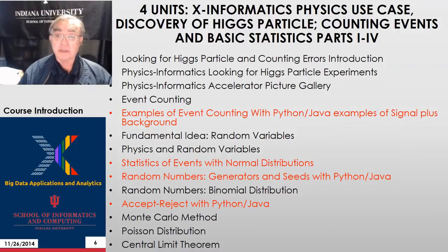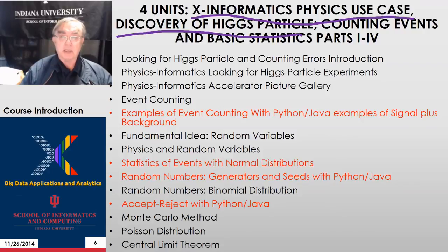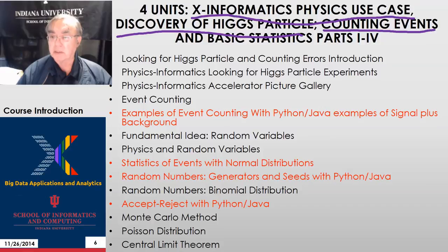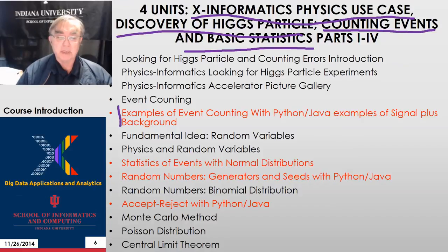This is the final slide of this particular lesson, covering just the first few sections of the class. Then we have four units on the x-informatics physics use case, focused entirely on the discovery of the Higgs particle, although a lot of the discussion is pretty general. We use this as an opportunity to discuss general counting experiments — physics just counts the number of times a certain thing happens, which is a very general experimental technique described by a certain type of statistics. The red items are where there's software, which is Python in the actual course slides, although you can do all of this in Java.